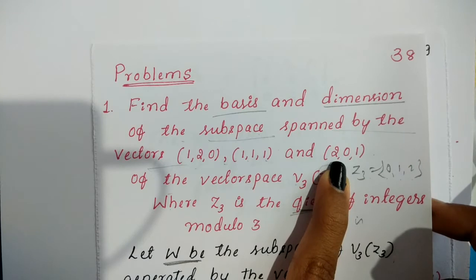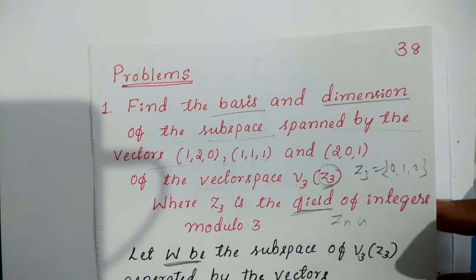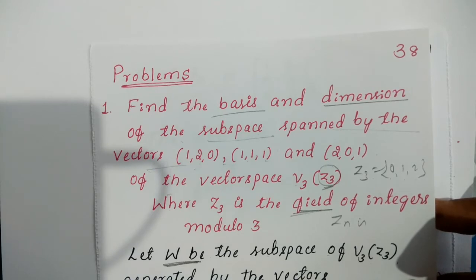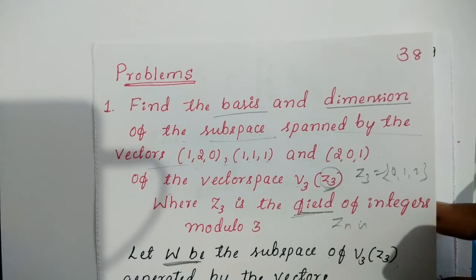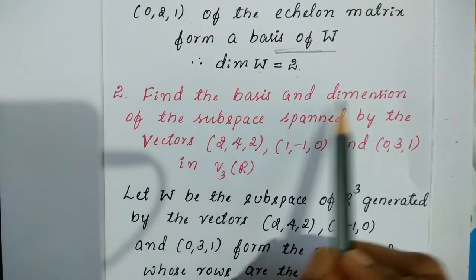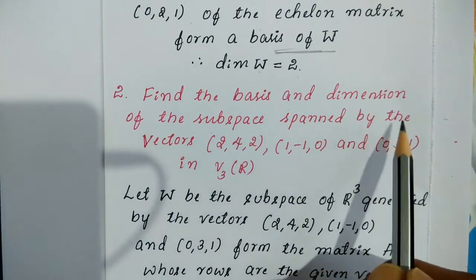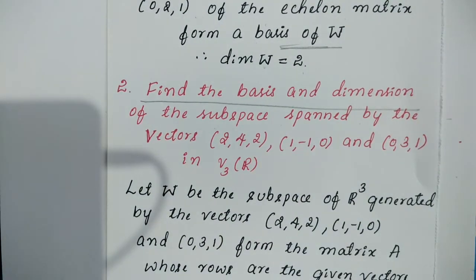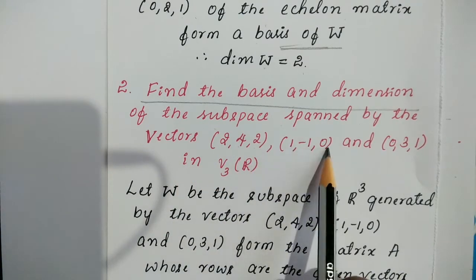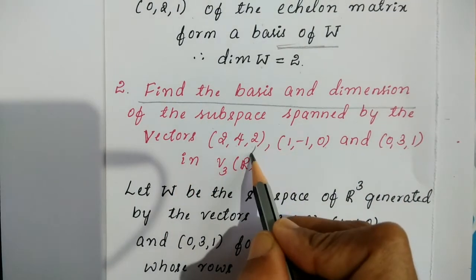Summary of the method: Step 1 — take the given vectors as rows and denote it as matrix A; Step 2 — reduce to echelon form; Step 3 — the final non-zero rows form a basis and the total number of non-zero rows is the dimension. Now the second problem: find the basis and dimension of the subspace spanned by the vectors (2,4,2), (1,−1,0), (0,3,1) in V3 of R (real numbers).